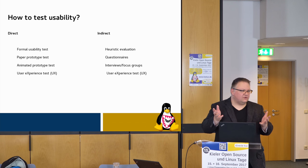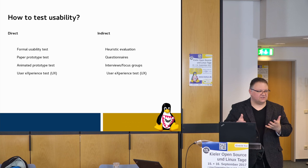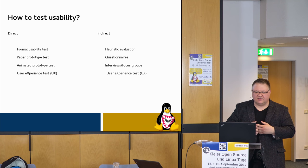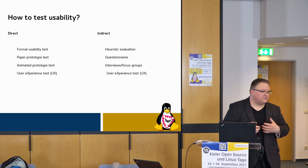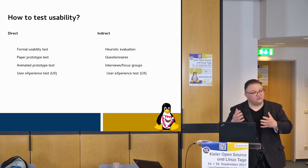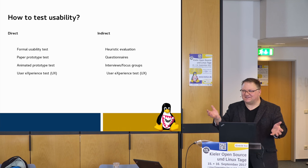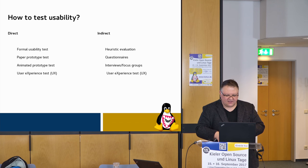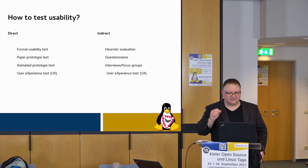For indirect testing, you can do what's called a heuristic evaluation — a usability expert comes in and gives an evaluation of how usable your program might be. You could do questionnaires, which you see websites doing a lot. You could do interviews or focus groups. User experience tests are both direct and indirect — they're kind of fuzzy and really hard to do, so I've reserved that for the end if there's time.